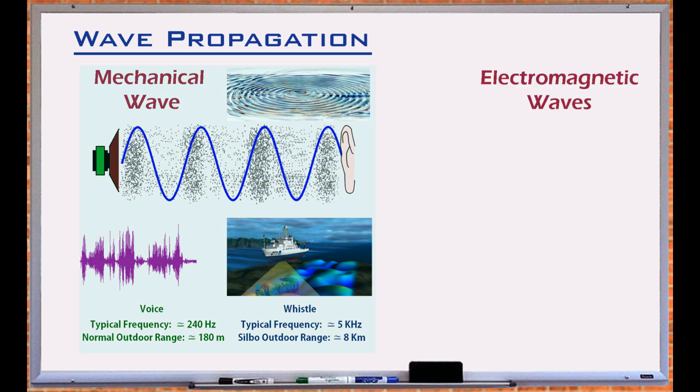To transmit information over very long distances, electromagnetic waves are used. Electromagnetic waves or EM waves spread without the need for a medium, travel at the speed of light, do not lose energy in vacuum, and can travel forever.